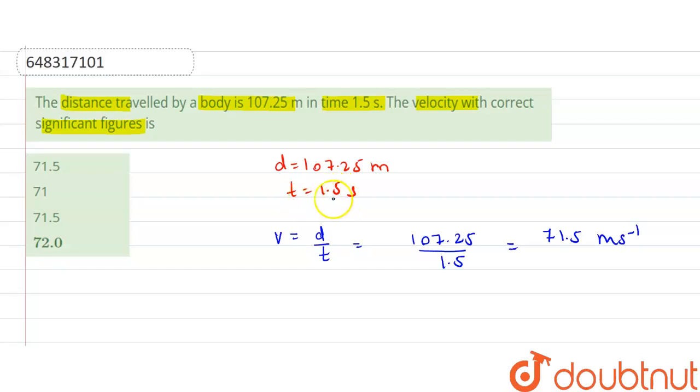So here minimum number of significant figures are 2. So answer should have 2 significant figures. Here we can see there are 3 significant figures. Velocity will be 71 metre per second. That is why option 2 is the right option. Thank you.